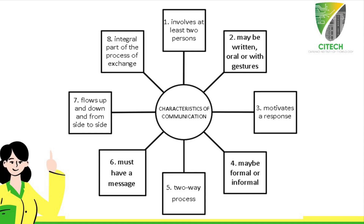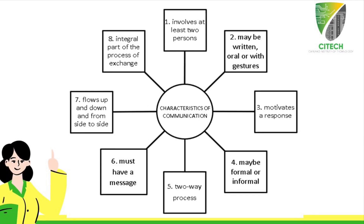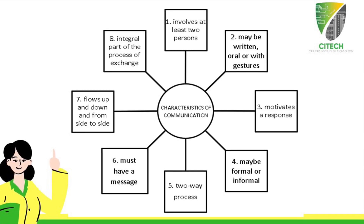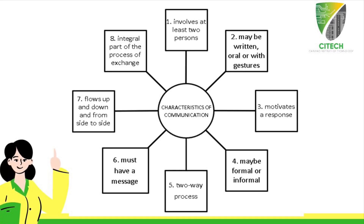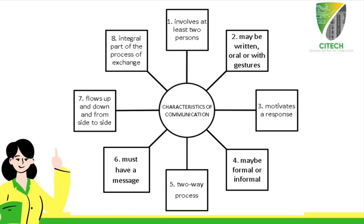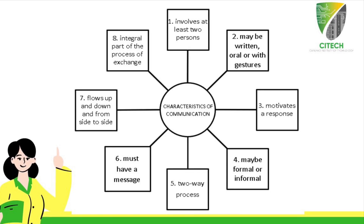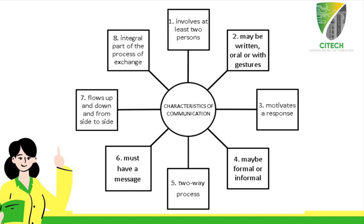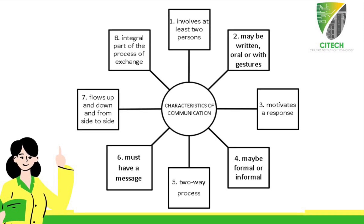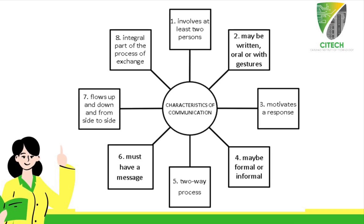Communication involves at least two persons — somebody who is talking and somebody who is listening. Number two, it may be written, such as in letters and books, oral, or with gestures. Number three, it may be formal or informal depending upon the situation. Number five, it is a two-way process. Number six, it must have a message, because without one, what is the purpose of communicating? Number seven, it flows up and down and side to side, encompassing everything within the process of communication. And number eight, it is an integral part of the process of exchange.